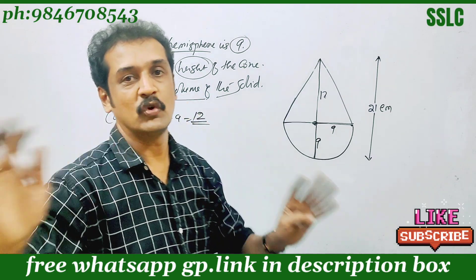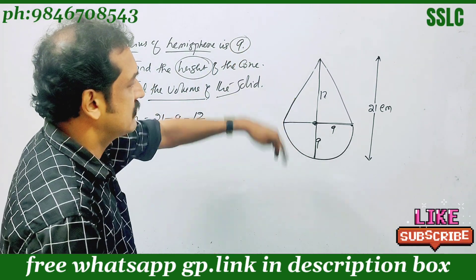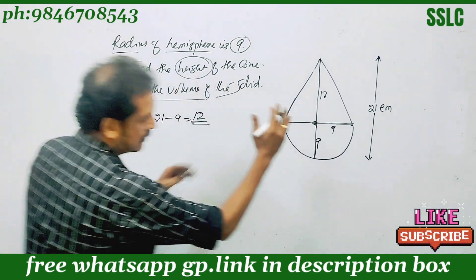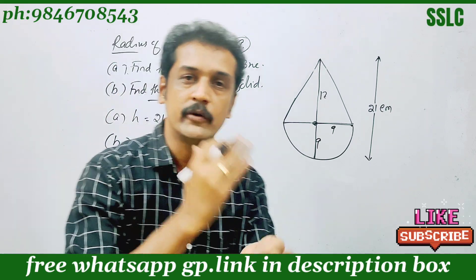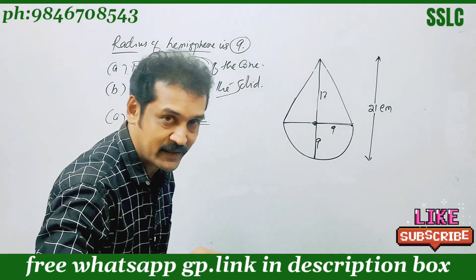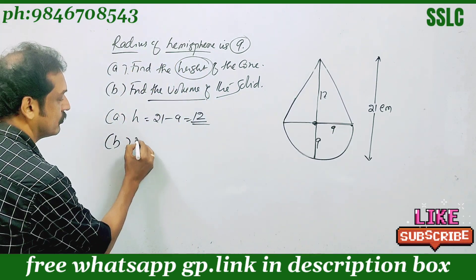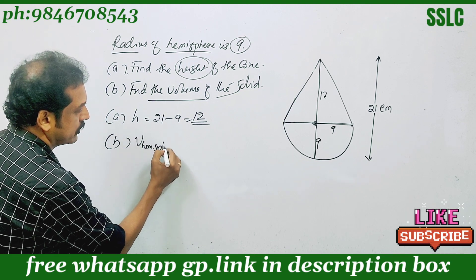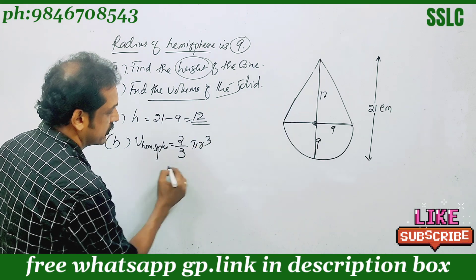Find the volume of the solid. The solid is the volume. We separate these two parts: that is the hemisphere, and the cone. I am going to use the third part — that is the volume of the hemisphere.